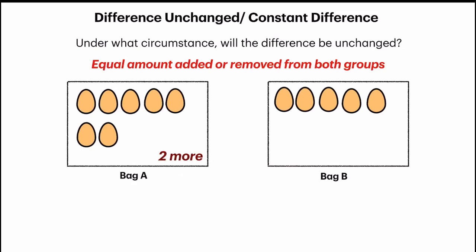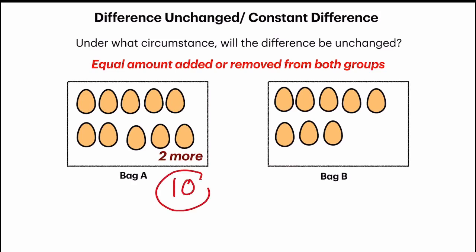For example, I'm going to add three eggs into each bag now. So the total eggs in bag A would be 10 eggs, and the total eggs in bag B would be 8 eggs. And what do you notice? There are still two more eggs in bag A.